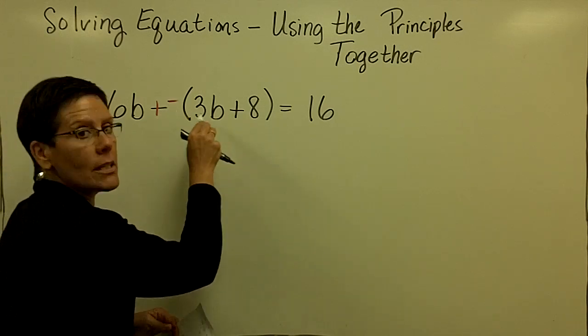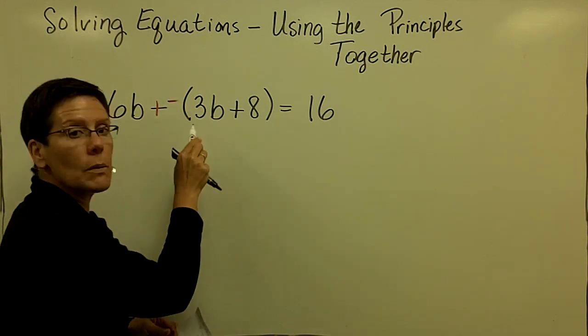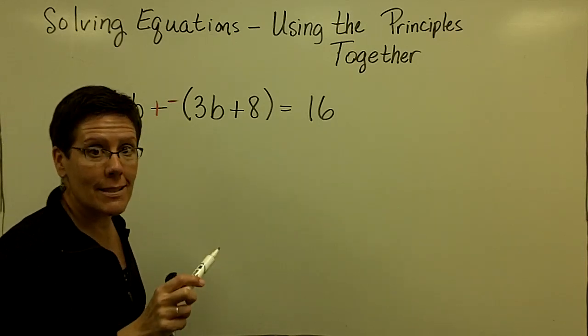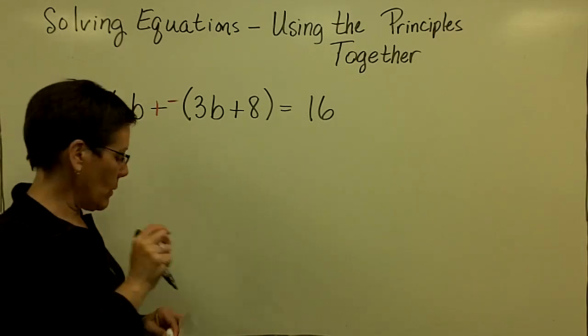Add the opposite of both of those. So the opposite of 3B is a negative 3B and the opposite of a positive 8 is a minus 8. That's one way to think about it.